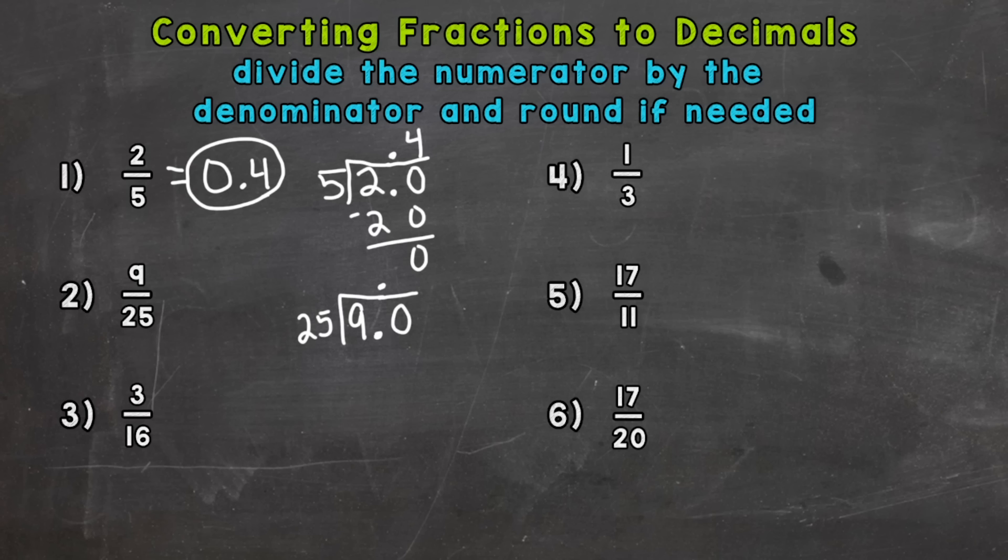How many whole groups of 25 out of 90? Well, 3. 3 times 25 is 75. Subtract we get 15. So we did not get a zero right away like number 1. So we can extend this division problem by putting another zero on the end.